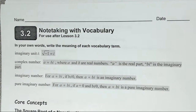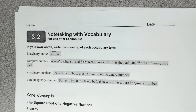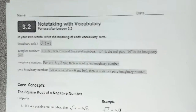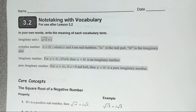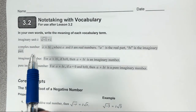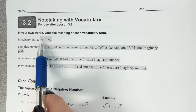Section 3.2 is on page 52 in your student journal. We're going to start off by talking about what is an imaginary unit. We're going to have it highlighted — this is what you need to write down.